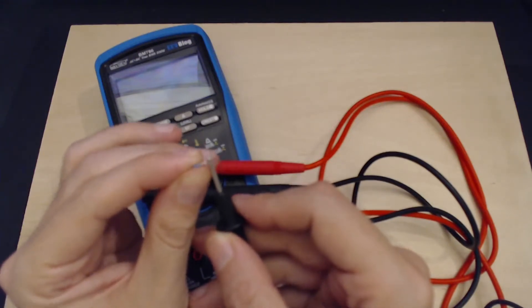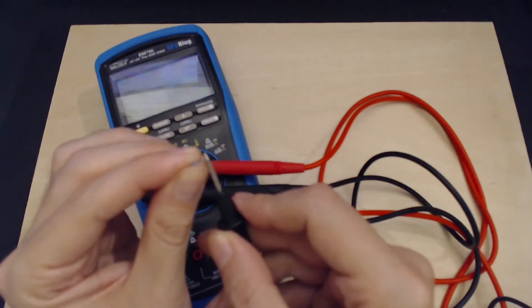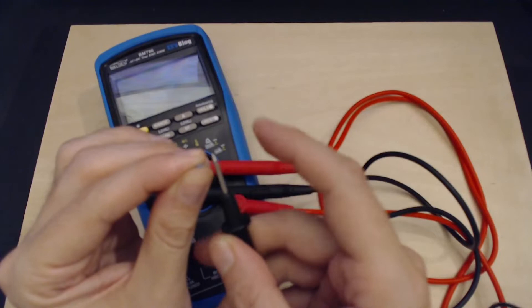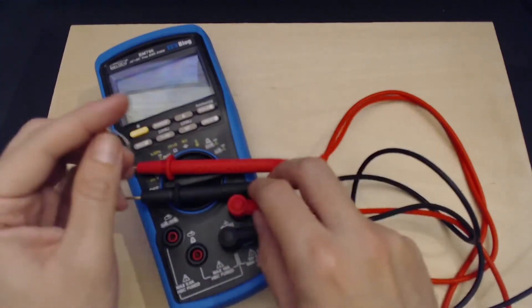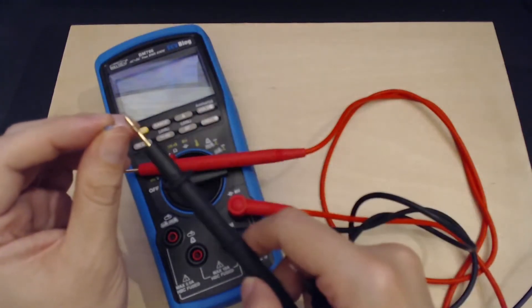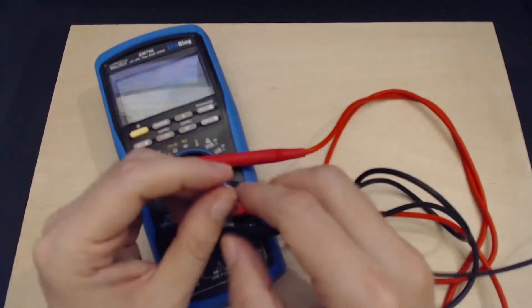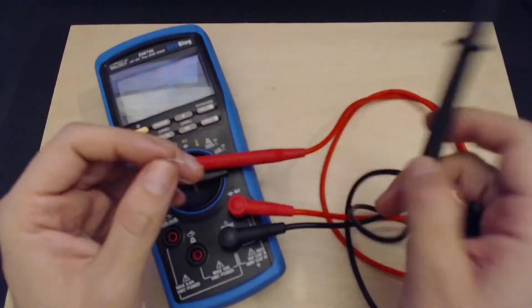You know that your probe is locked in there, and then with the other probe you can do other measurements. With these ones you don't have that, so if you're not looking you might just slide away. It's not as easy to lock one of your probes somewhere and then do measurements with the other probe.